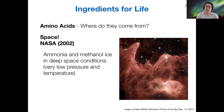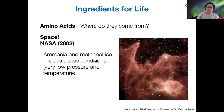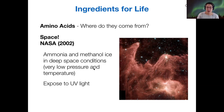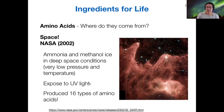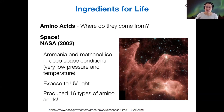NASA did an experiment sometimes called the IC Miller-Urey experiment, where they took the types of materials you might find in space — such as ammonia and methanol ice — under deep space conditions: very low pressures and temperatures. They exposed those to ultraviolet light, like you might get from a young star. They found that they produced 16 types of amino acids. So it's totally possible that amino acids formed on earth, or they could have formed in the space environment and been delivered to earth later by asteroids, meteors, that type of thing.